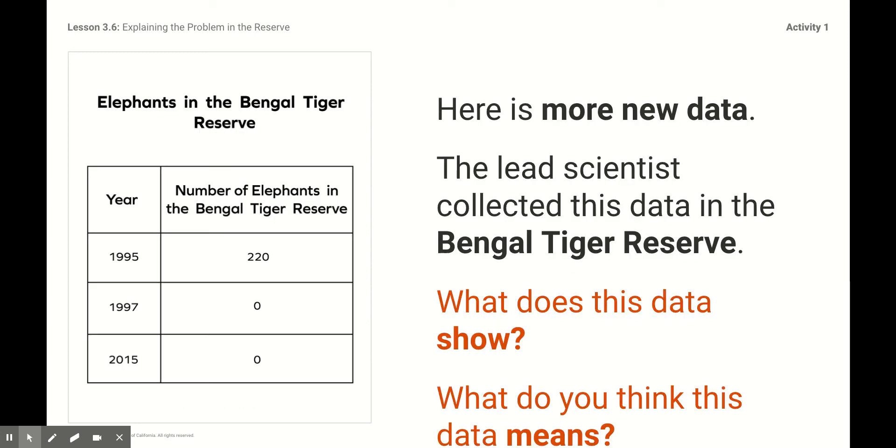Here is an explanation about the two types of animals that live within the reserve, the tigers and the elephants. One scientist collected some information about them. He noticed that in 1995, there were 220 elephants living within the reserve. But then if you look at the next two years later, 1997, there were none. And by 2015, there were none. Do you think that might affect the chalta trees?